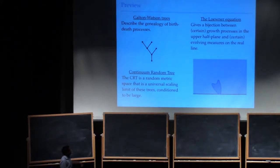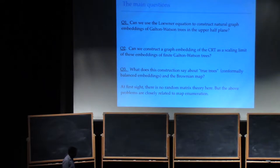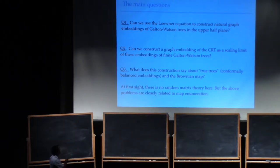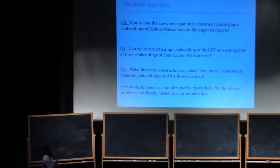The Löwner evolution is a canonical method of developing conformal mappings. This talk is really about three questions. One of them is completely nailed. One is not quite nailed but we have a very good sense of what should come out. The third is a little more tentative. The first question is: can we use the Löwner equation to construct natural graph embeddings of Galton-Watson trees in the upper half plane? I really want to find a natural way of building conformal mappings that have the property of making trees.